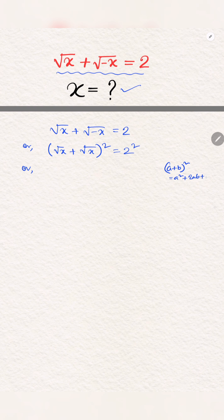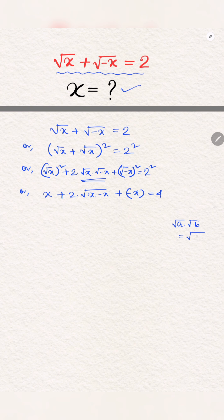And now we apply the (a + b)² formula, so we get the result. Now square and root will eliminate.